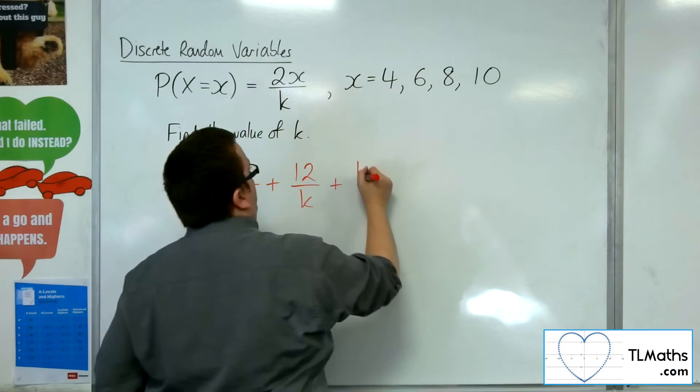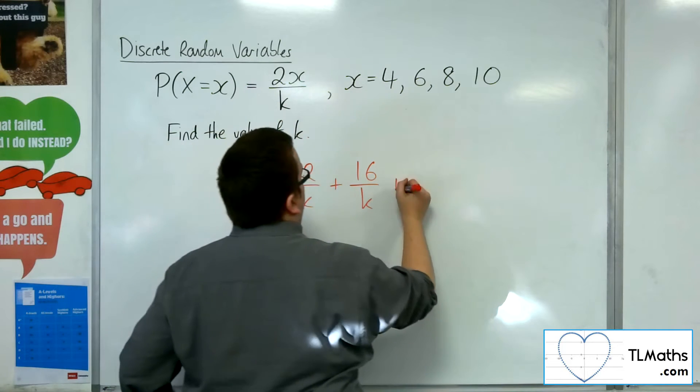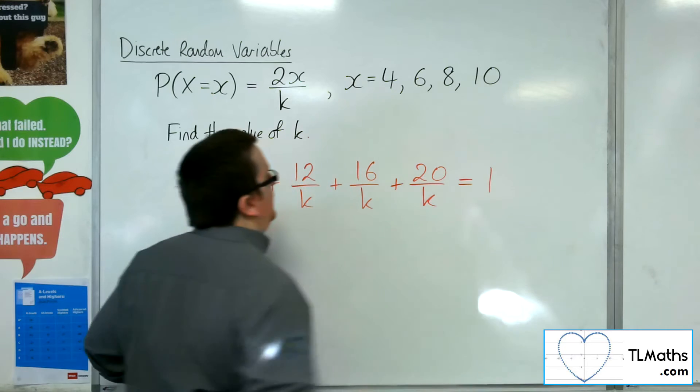And when I substitute in 8, I'll get 16 over k. And when I substitute in 10, I'll get 20 over k. And I know that all 4 of those probabilities must add up to 1.